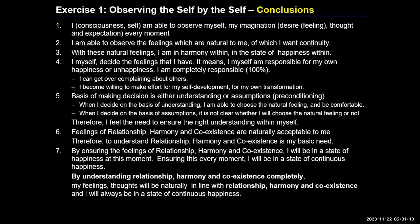I want a little bit of clarification in exercise one. When I am able to understand the incompleteness, the relationship, harmony and co-existence — but what does completeness indicate? It is something applicable to the whole existence. This co-existence, harmony, and relationship — I am able to see for the whole existence. Then it is seeing it in completeness.